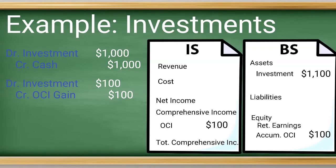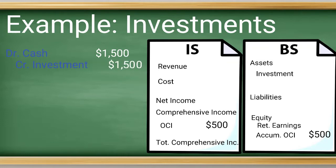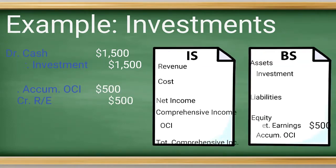Let's say another quarter brings another increase, this time for $400. Those entries look the exact same: debit investment and credit OCI. Now let's say you sell the asset shortly after that next quarter for $1,500. Your entries are a debit to cash for $1,500 and a credit to investment. Then we need to transfer our unrealized gains in accumulated OCI to retained earnings now that those gains have been realized. That entry is a debit to OCI for $500 and a credit to retained earnings.